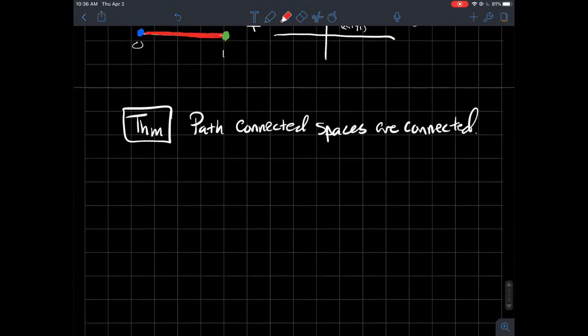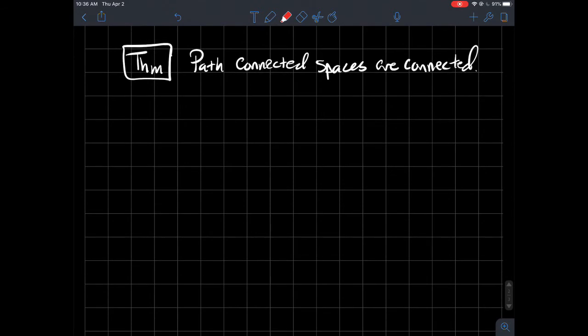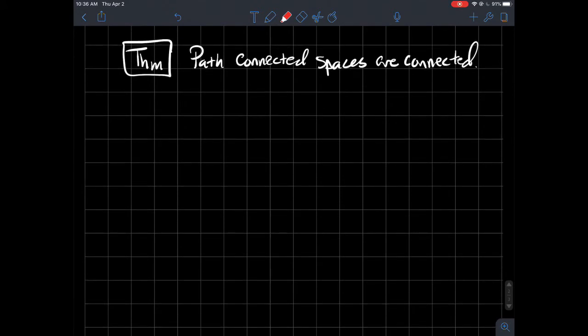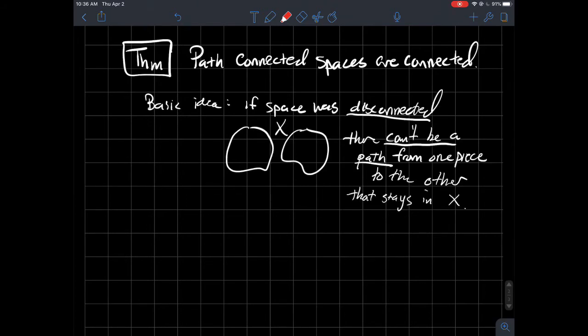So here are some kind of theorems, big theorems, in this section on path-connected spaces. Any path-connected space has to be just regular old connected as well. So the basic idea for that was, well, what if the space was disconnected?